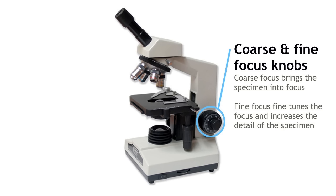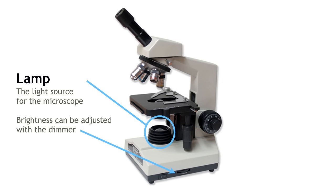The coarse and fine focus knobs move the stage towards or away from the objective lenses depending on which way it is turned. The coarse focus knob brings the specimen into focus. The fine focus fine tunes and increases the detail of the specimen.